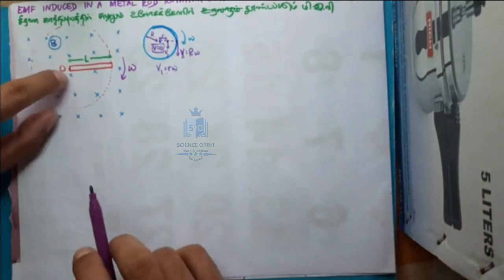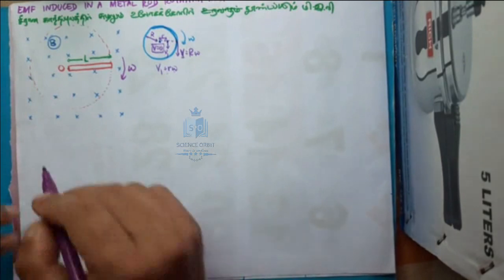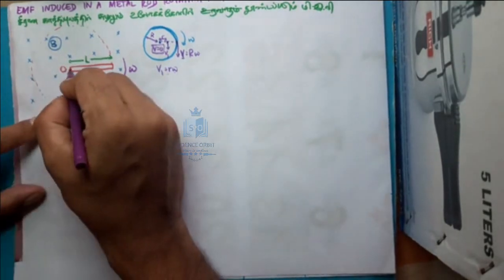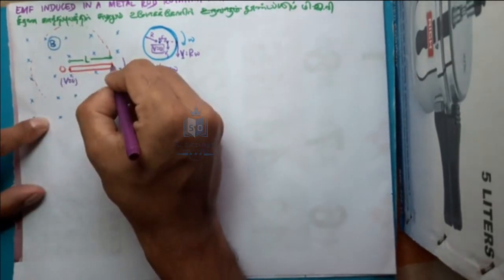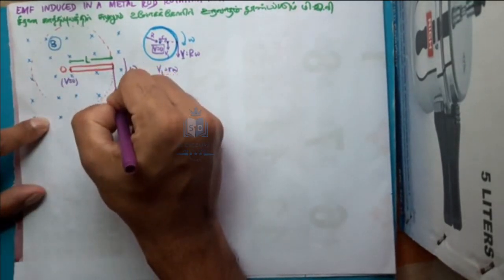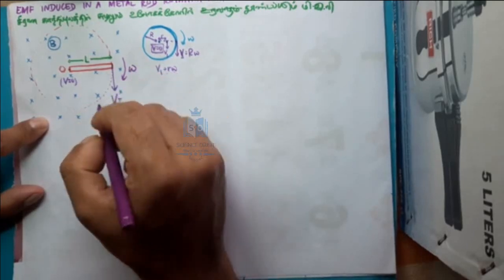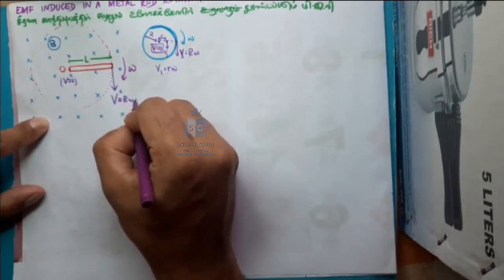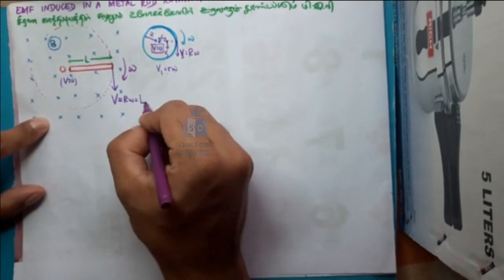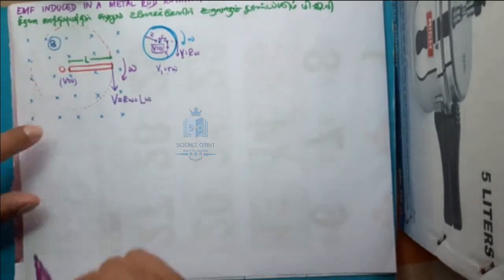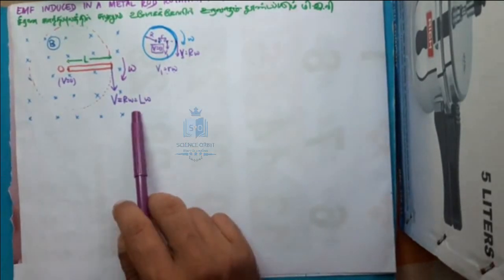This is the same way we can mark the velocities here. The velocity at the pivot point O is 0. The velocity at the tip of the rod is v = Lω, where L is the length of the rod. I hope you understood that.